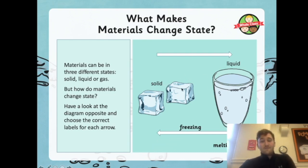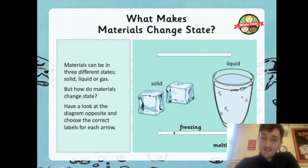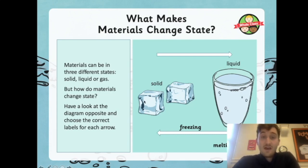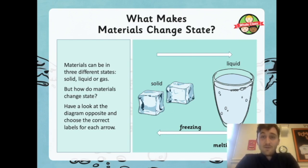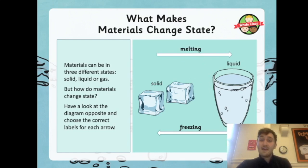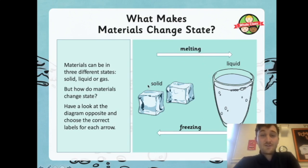So freezing: when we have a liquid and we want to freeze it, it turns into a solid. If we freeze water, we make it into ice. For example, when you want ice cubes for your drinks you can put water in an ice tray, put it in the freezer, and it turns into ice. And melting: when we leave ice out too long or put it into a warmer drink, it melts back into a liquid.